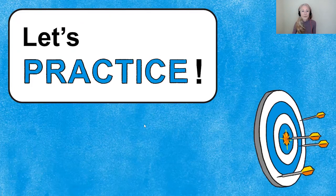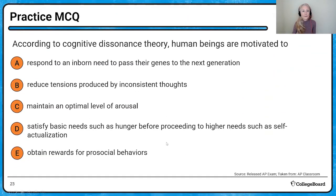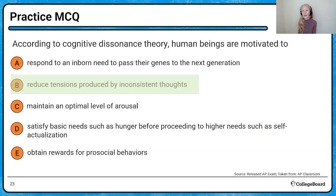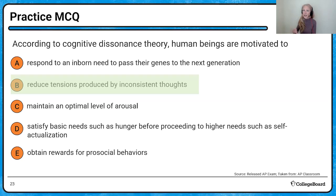Practice question on cognitive dissonance theory: we are motivated to reduce the internal psychological tensions produced by inconsistent thoughts. The typical example is somebody smokes even though they know it's bad for them. So you vape and know it's bad — you'll experience dissonance. When you experience that dissonance, you're motivated to reduce it by either stopping vaping, or saying to yourself, 'I'm going to vape a little bit, it's not that bad, it's not going to hurt me.'